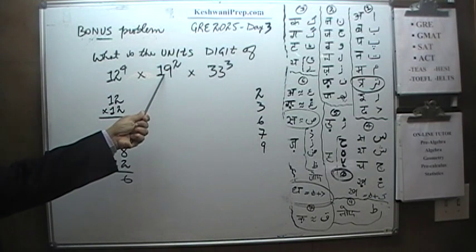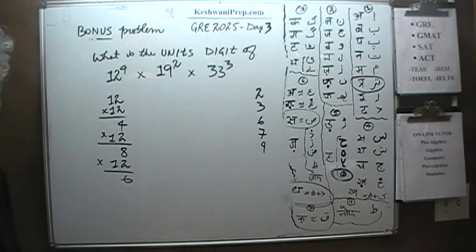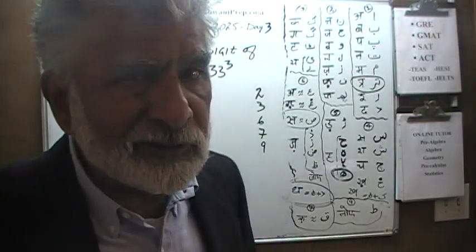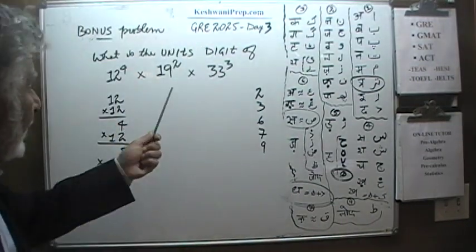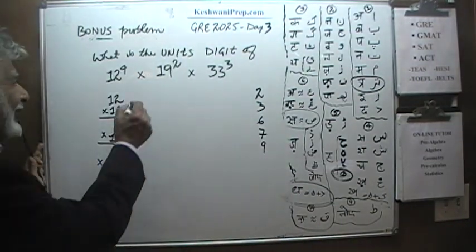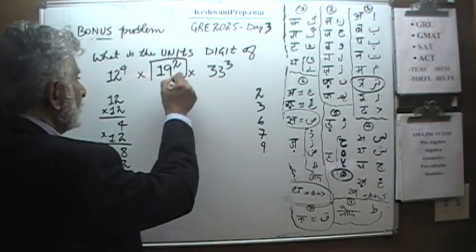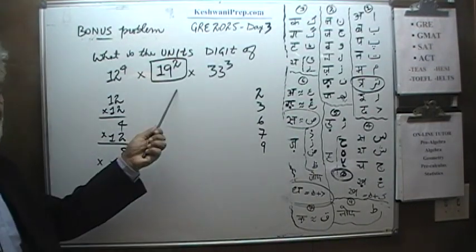Let's work on this one. This actually plays no role, it's very trivial. It plays no role because 19 squared, when you multiply 19 by 19, 9 times 9 is 81, it's going to end in 1. And because it ends in 1, this quantity actually plays no role.